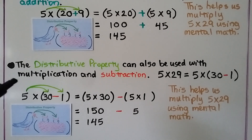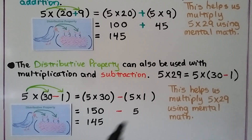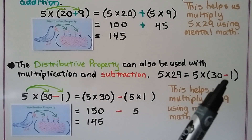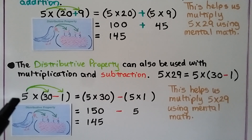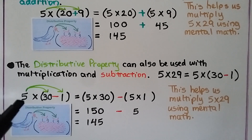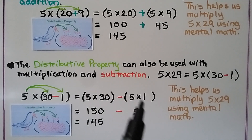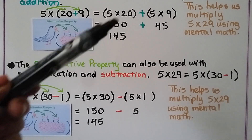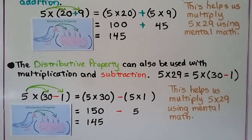The distributive property can also be used with multiplication and subtraction. We had 5 times 29 — we can think of that 29 as 30 minus 1, which equals 29. We do 5 times 30 minus 5 times 1. And 5 times 30 is 150, and 5 times 1 is 5. We subtract 150 minus 5 — that's 145. Same answer as when we used addition. This also helps us multiply 5 times 29 using mental math.